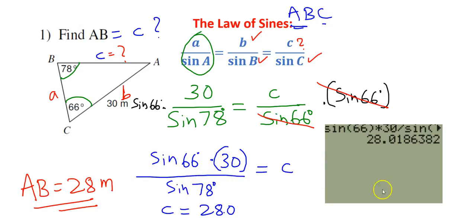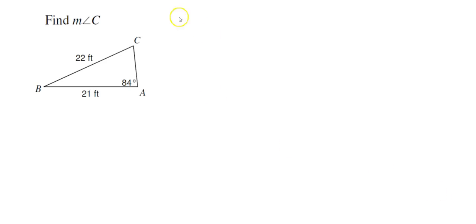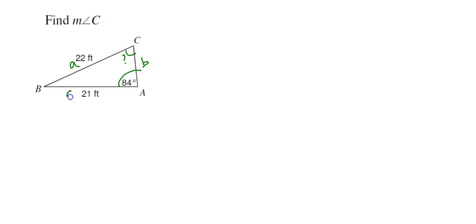Now let us find an angle. In this problem you are looking for the measure of angle C. Let us label the other information: angle A is 84 degrees, and opposite to angle A is lowercase a with a measure of 22 feet. Angle B and lowercase b are not given. Lowercase c equals 21 feet.